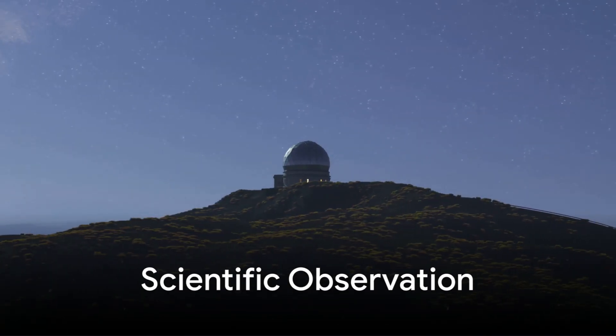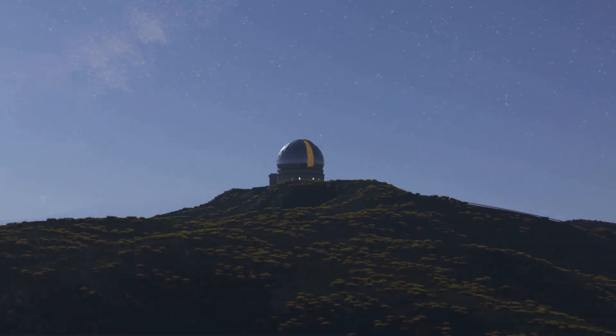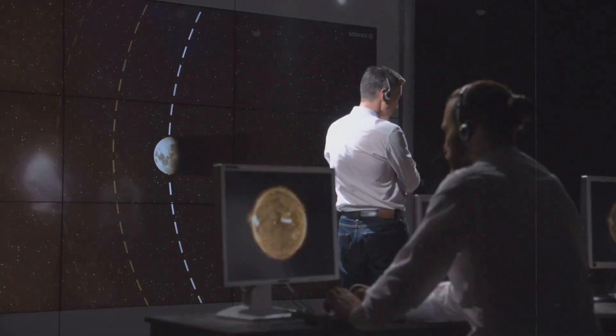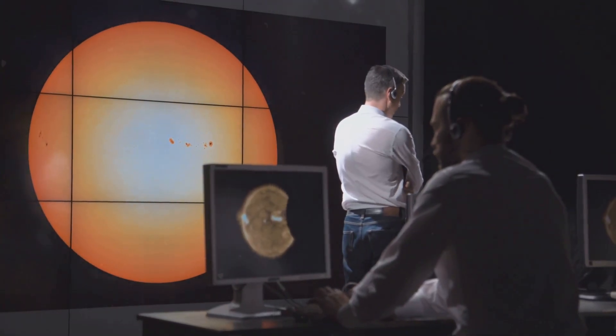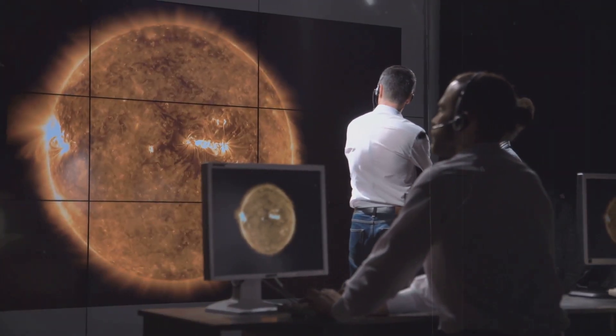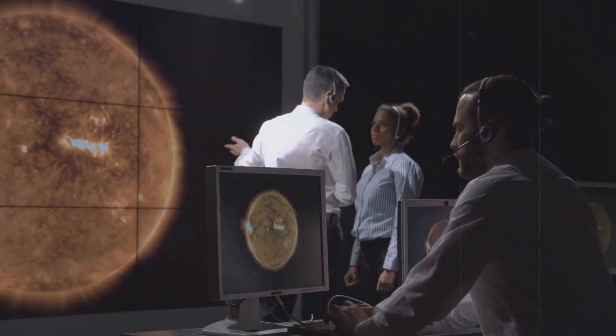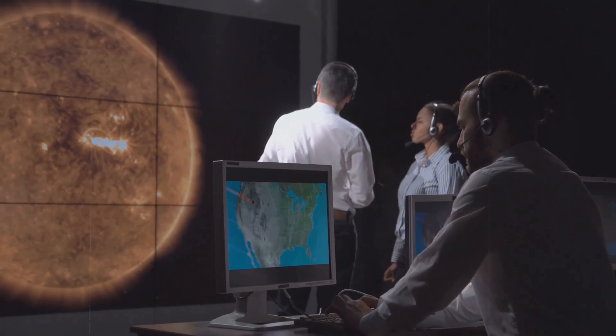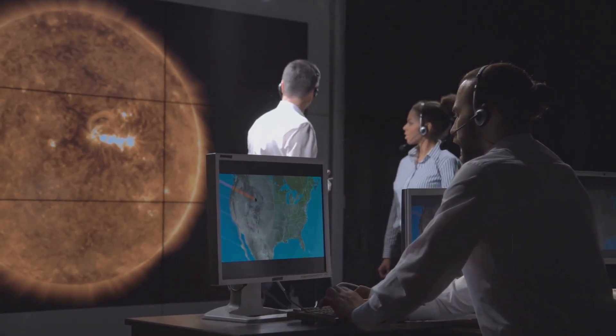Astronomers track them with calm precision, logging their paths and calculating their distances. Yet behind the numbers lingers unease. The timing is uncanny. The sun itself is restless, nearing the peak of its natural cycle, throwing off eruptions of light and matter.